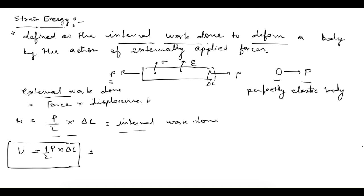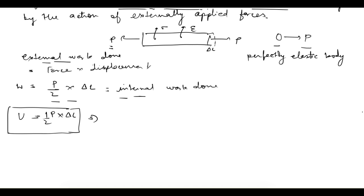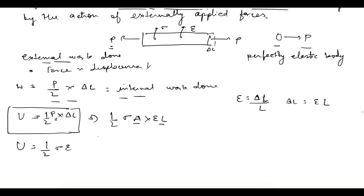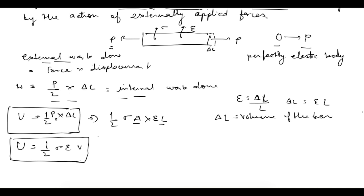This is one form of the equation. We can rewrite it to get other forms. Load P can be written as stress times area, and delta L can be written as strain epsilon times original length L (since epsilon = delta L / L). So U equals half times sigma times epsilon times A times L, and A times L is the volume V of the bar. We can further write strain as stress divided by modulus of elasticity, giving U equals half times sigma squared over E, times volume.